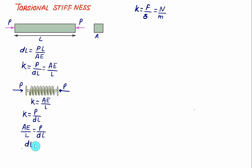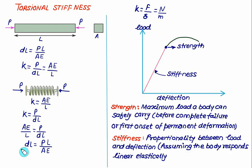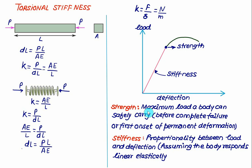The deformation DL equals P·L divided by AE. This equation is valid till the proportionality limit. On a load-deformation graph, there is initially a straight-line relationship between load and deflection — that is stiffness. In this zone the material is elastic; after that yielding starts. Strength is the maximum load a body can safely carry before failure or onset of permanent deformation, whereas stiffness is the proportionality between load and deflection, assuming linear elastic response.